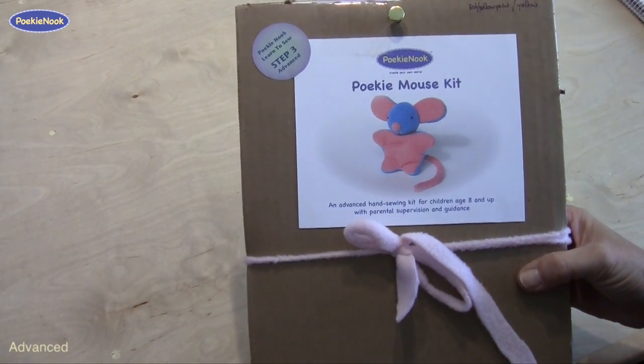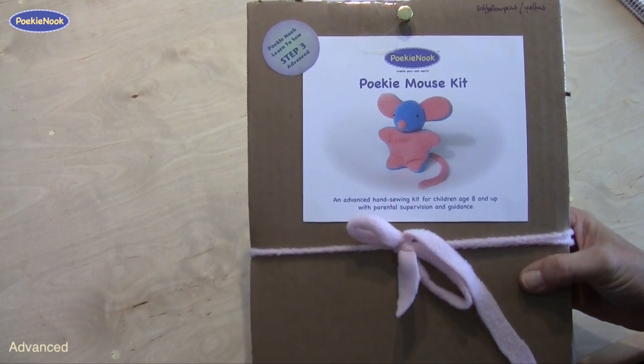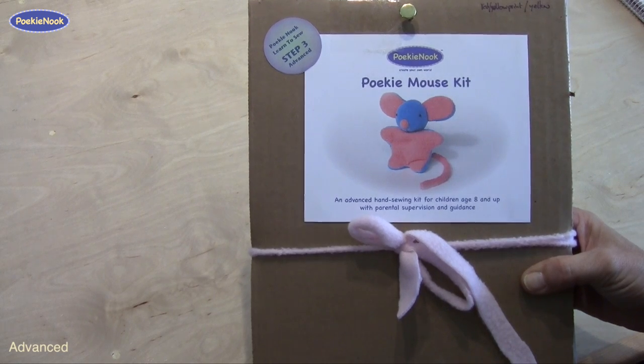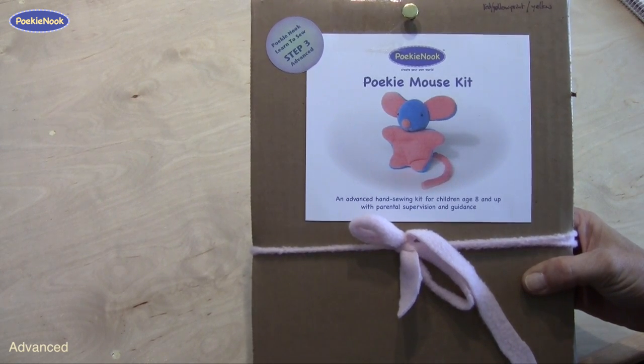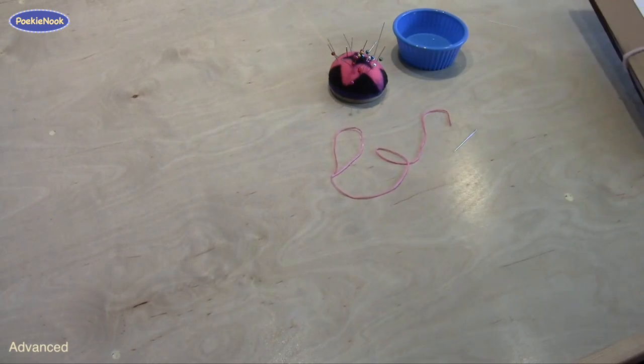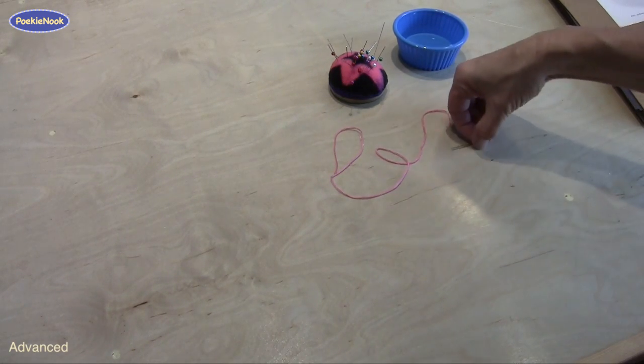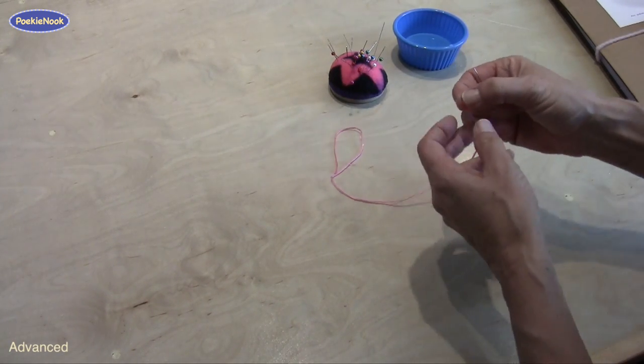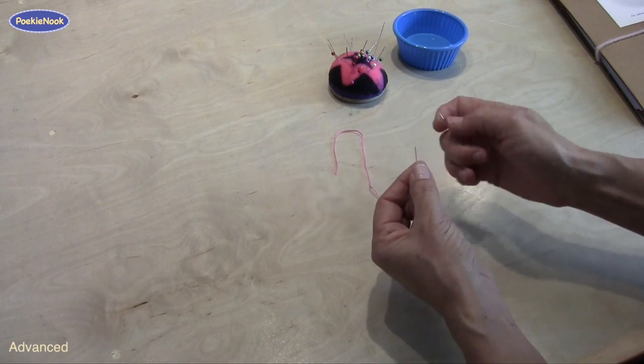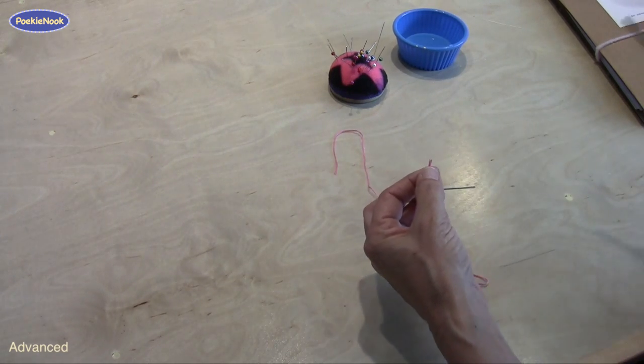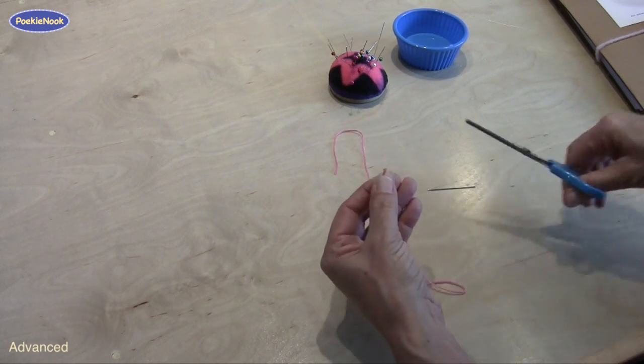For the advanced kit, we use the same white or black thread to sew the Pookie, but for the mouth, there will be included a thick, colorful string and a very thick needle. This string consists of six strands, so you have to make sure you cut it very sharp.